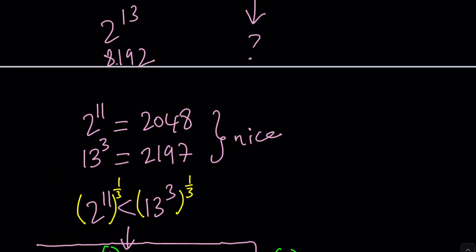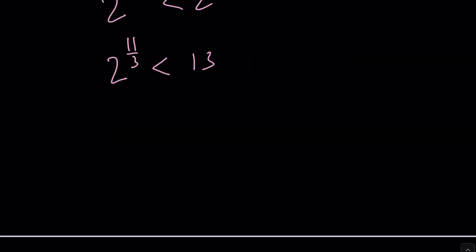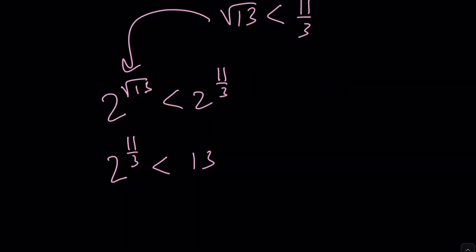But we also know that 2 to the 11 third is less than 13. How do we know that? Well, from here, right? So, now if you put these two together, what do you get? Using the transitive property, we can attach it here.